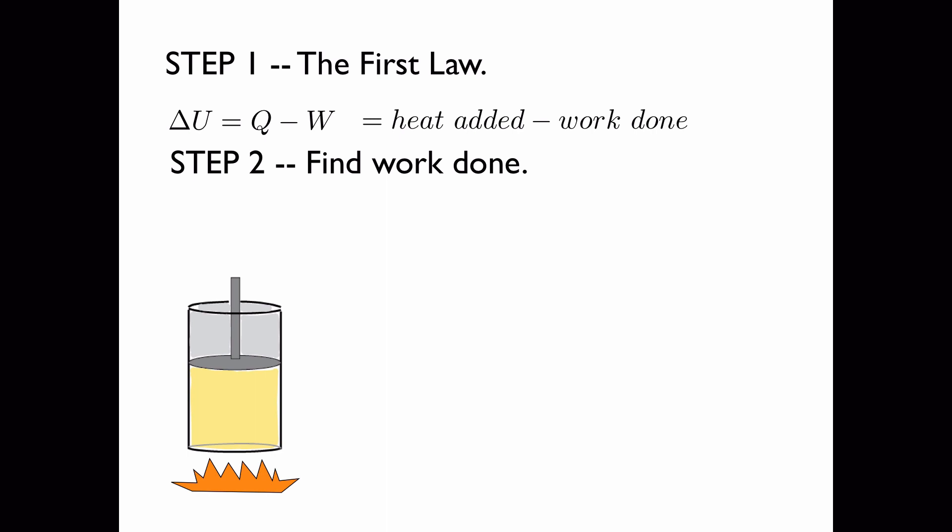So we're going to find the work done. It was stated on the last slide that 900 joules of heat is added, so if we find the work done, we'll subtract that from 900 and we'll get the change in internal energy. Work is equal to pressure times the change in volume. The pressure was stated to be 20 kPa, so we have to find the change in volume.